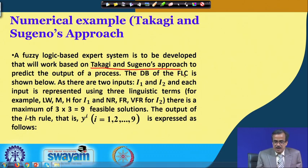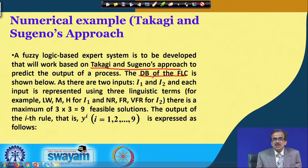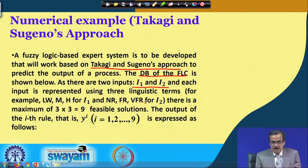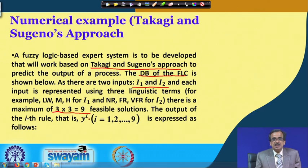The membership function distribution is shown particularly for the two inputs, because for the output variable there is no such distribution. There are two inputs i1 and i2, each represented using three linguistic terms — low, medium and high for i1, and near, far and very far for i2. So there is a maximum of 3×3 = 9 feasible rules. The output of the ith rule, yi, where i varies from 1 to 9, is expressed as a function of the inputs.